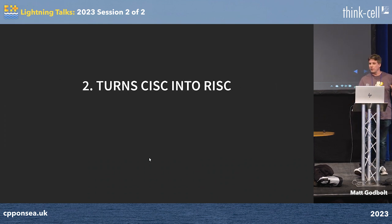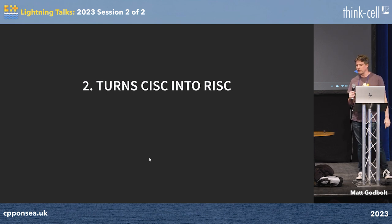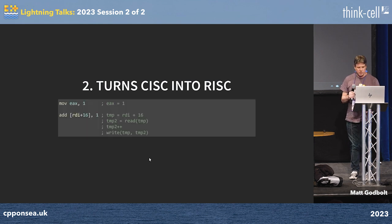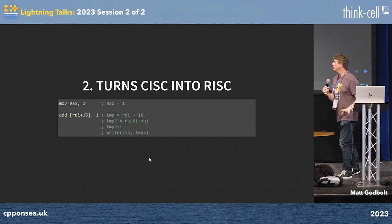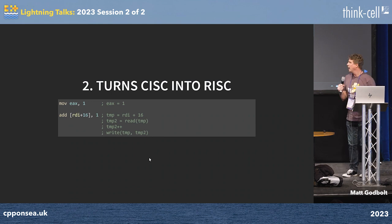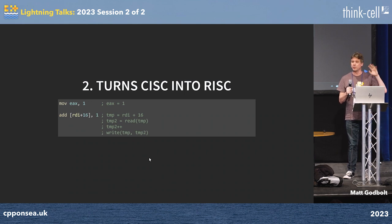Second thing it does is turn CISC into RISC. We all remember the CISC-RISC wars back in the day — ARM is RISC, x86 is CISC. Well, your x86 processor is really a RISC processor, it's just hiding it from you. The CISC nature of instructions like ADD RDI+16,1 is a whole bunch of operations, and really they can be broken down into four things — that's exactly what's happening inside your CPU. It turns those big instructions into tiny little instructions and then schedules them internally in its own unique way.